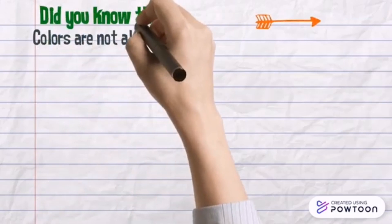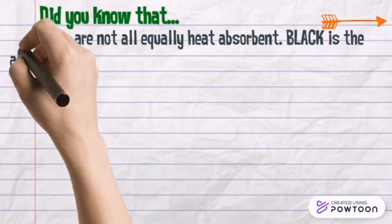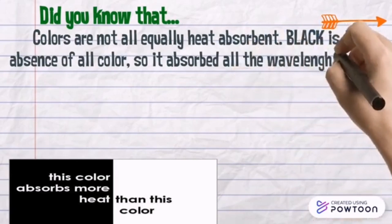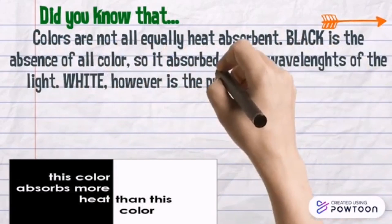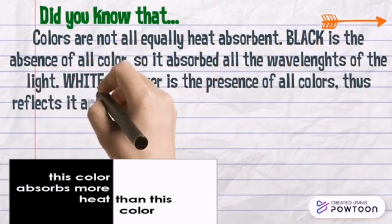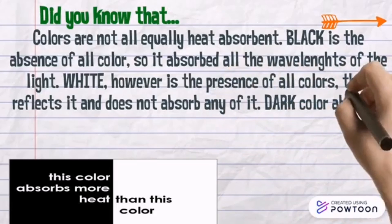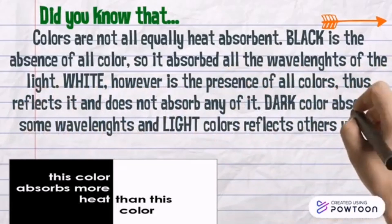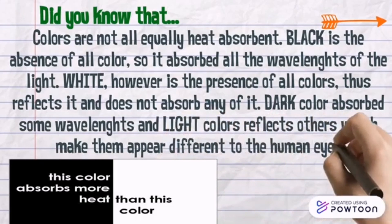Colors are not all equally heat-absorbent. Black is the absence of all color, so it absorbs all the wavelengths of light. White, however, is the presence of all colors, thus reflects it and does not absorb any of it. Dark colors absorb some wavelengths, and light colors reflect others, which makes them appear different to the human eye.